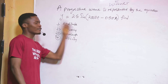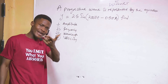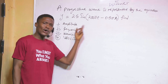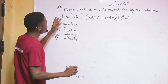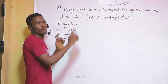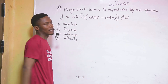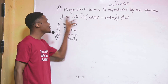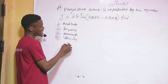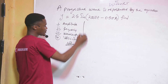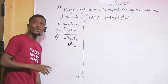In JAMB or WAEC or nursing exams, they can ask you one of these questions — it's not a must that they ask you all of them. In WAEC theory they will likely ask for all of them, but in JAMB they can just give you the equation and ask only for the amplitude, or only the frequency, or only the wavelength, or only the velocity. We are going to see how to solve all of them, starting with the amplitude.